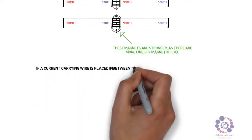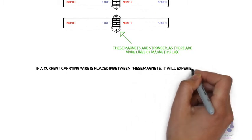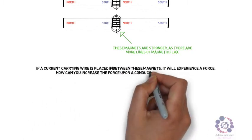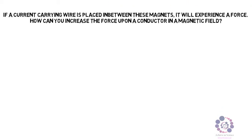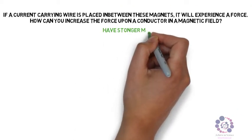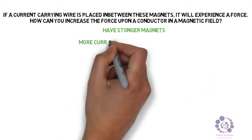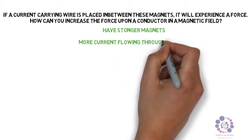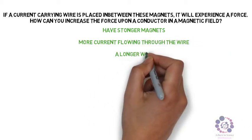If a current carrying wire is placed in between these magnets it will experience a force. Now how can you increase the force upon a conductor in a magnetic field? Well, you can have stronger magnets. You can have more current flowing through the wire. You can use a longer wire.